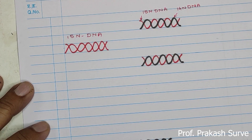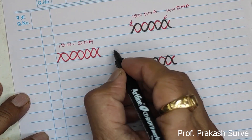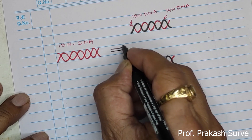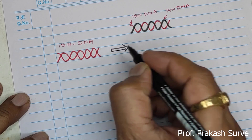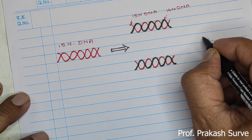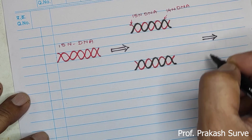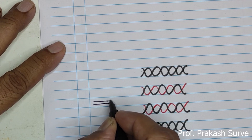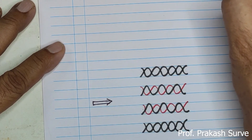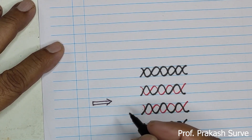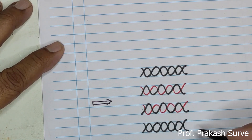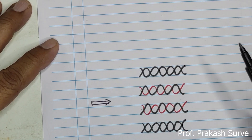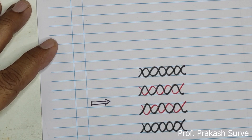Now here we will make the lines with arrows. So this is what we get after 20 minutes and after 40 minutes — this continues. After 40 minutes we got four different DNAs which are of two types: one which is of the light type and another is of the hybrid type.